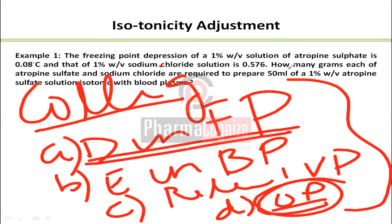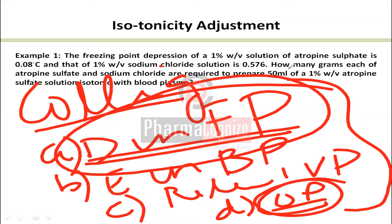So if I want my solution to be isotonic with blood, I need to match its osmotic pressure to that of blood. If I change the freezing point depression to match that of blood, the osmotic pressure will automatically become the same. This is the concept behind using freezing point depression to adjust osmotic pressure.